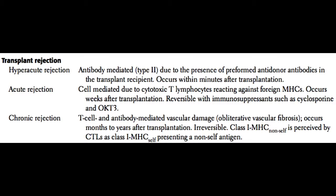Chronic rejection occurs in every single transplanted organ if given enough years — it takes years to develop. What's happening is that you have both T cell and antibody-mediated damage to the vessels of the new organ. Over time, class I MHC molecules from the donated organ are perceived by the host's T cells as a class I MHC self molecule presenting a foreign antigen.